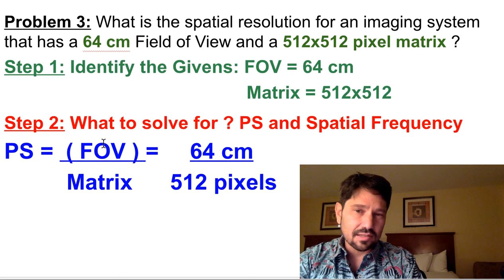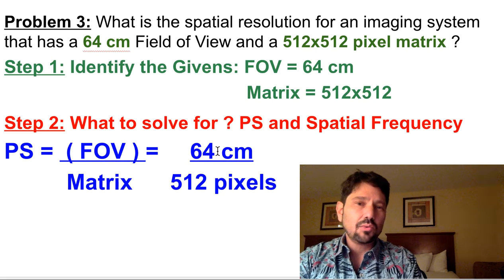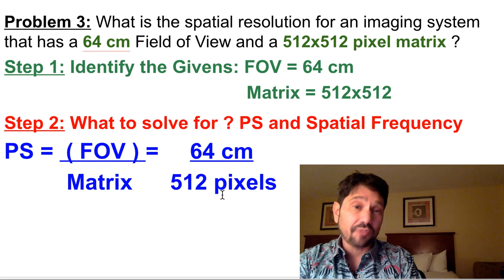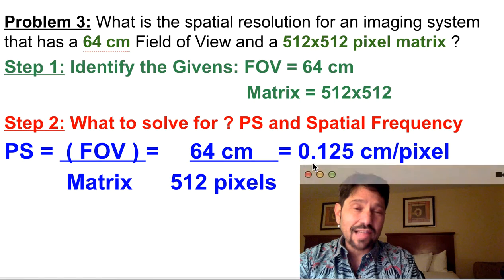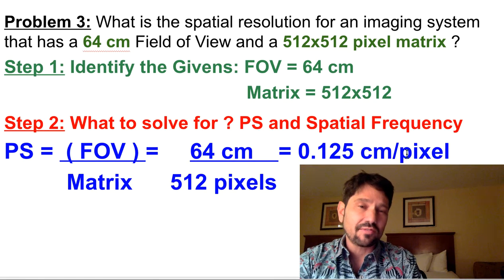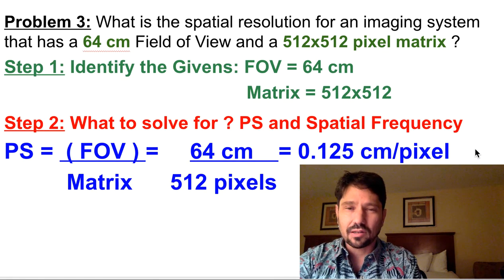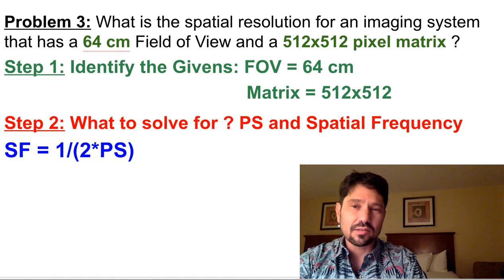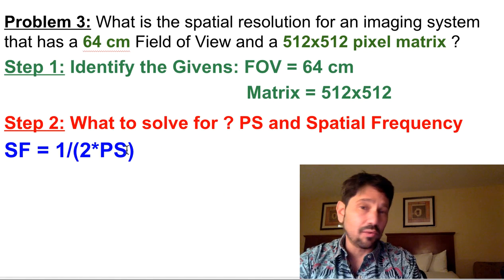So pixel size is the field of view over the matrix, which is 64 centimeters over 512 pixels, which lets us know that there's 0.125 centimeters per pixel. And that's what we'll use as pixel size to plug into the formula we know and love.